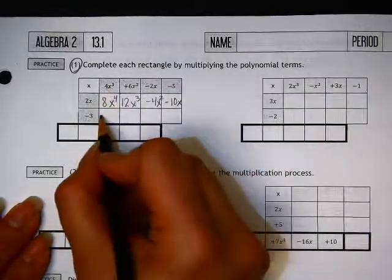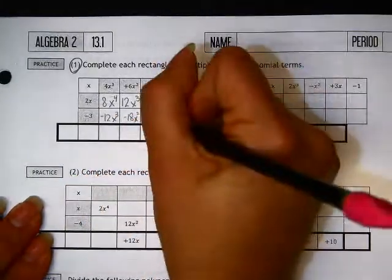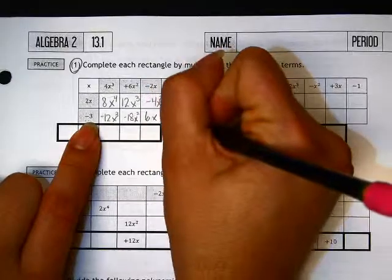I am going to multiply these guys now and get negative 12x cubed, negative 18x squared, 6x, and plus 15.